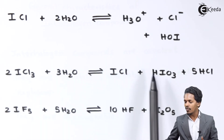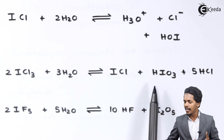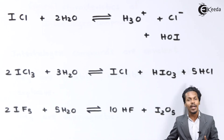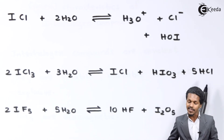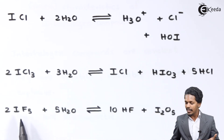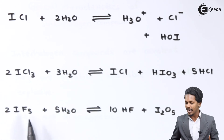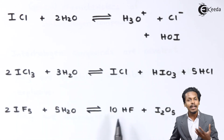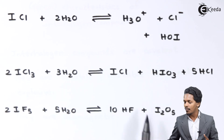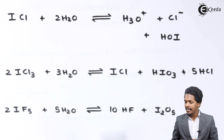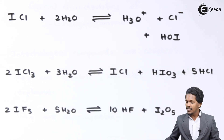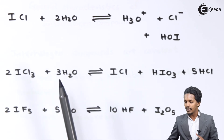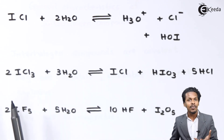In the next reaction, two moles of ICl₃ reacted with three moles of H₂O produces ICl, along with HIO₃ which is iodic acid, and five moles of HCl. In another reaction, two moles of IF₅ reacted with five moles of H₂O produces HF along with I₂O₅, which is known as iodine pentoxide.